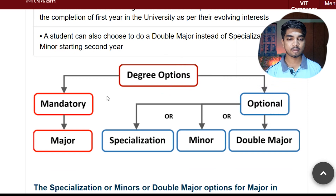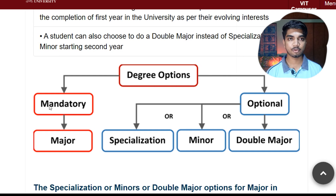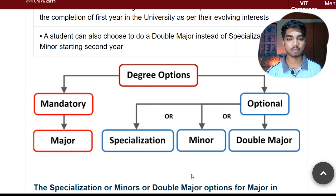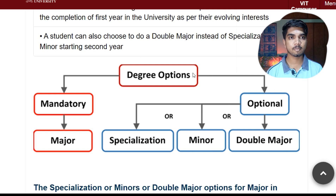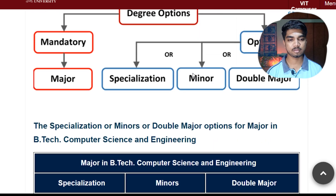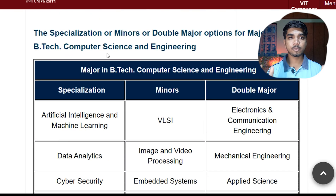Here you can look - there is your degree option, whichever degree you are choosing, then a few mandatory courses which you also need to do, and these we will call majors. In the optional section you have specialization, a few courses, minor, or double major courses - it depends on you which one you wanted to pursue and how you wanted to pursue it. That's completely up to you, and like that you can decide it.